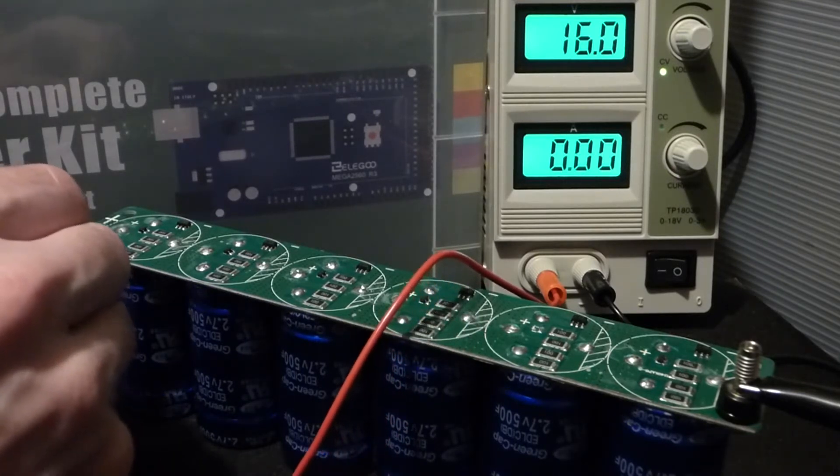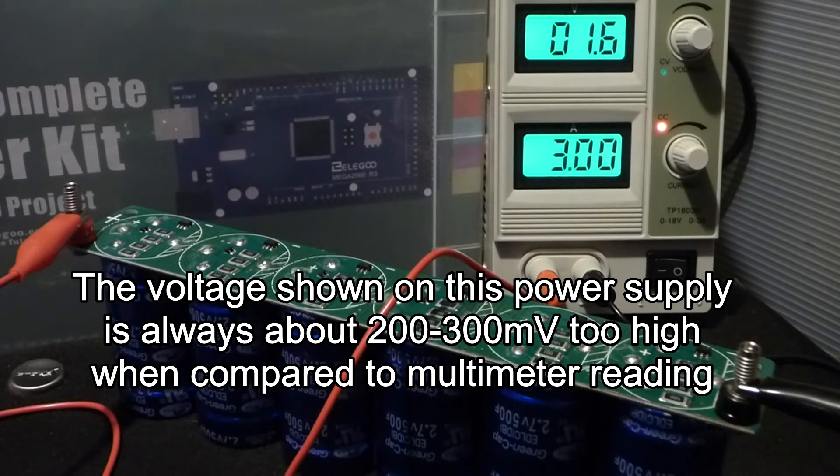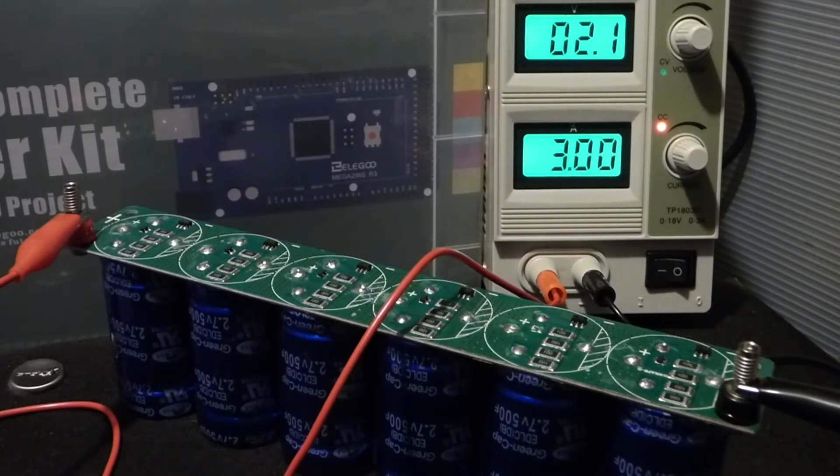As soon as I make this connection I'm starting the stopwatch. You'll see that the bench power supply started at about 1.5 volts and now it's going up.